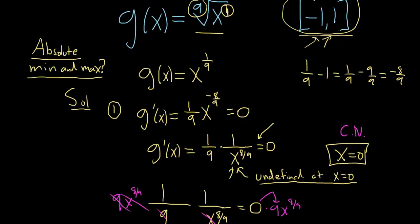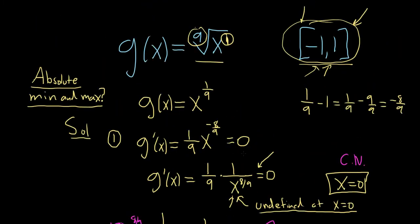The second step in this problem, once you find your critical numbers, is to take your critical number — which is x equals 0 — and take your endpoints — which are negative 1 and 1 — and plug them all back into the original function. The biggest answer you get is your max, and the smallest is your min.